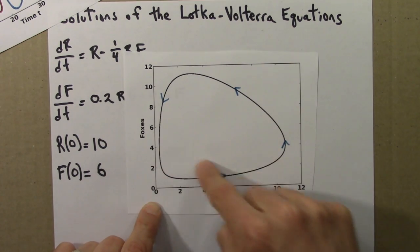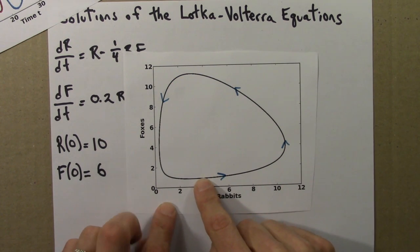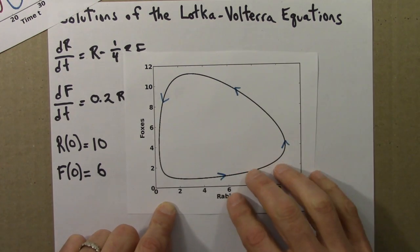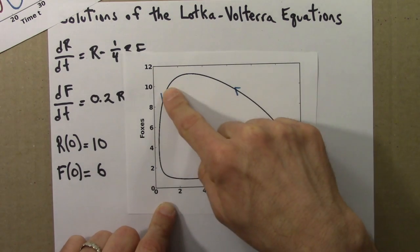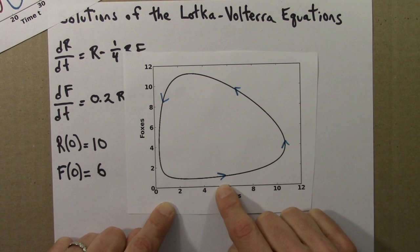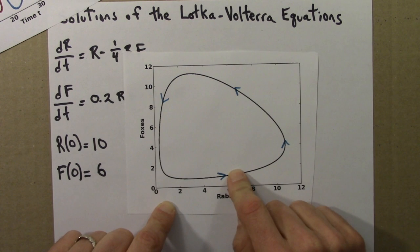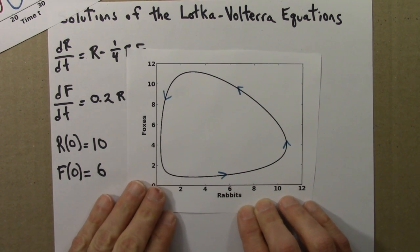So we could put arrows on this, just like we put arrows on the phase line. And we know that the population will cycle around like this. It doesn't tell us the time information. We don't know how long it will take to cycle around. It could take one time unit, 10, or 100. We lose that information when we go to a phase plane, just like we lose time information when we go to a phase line in one dimension.